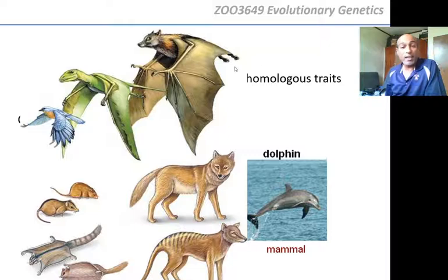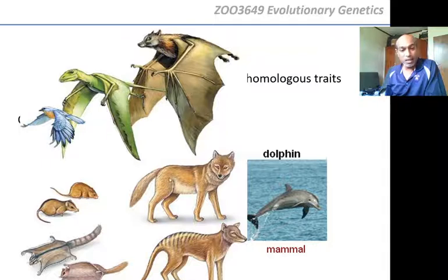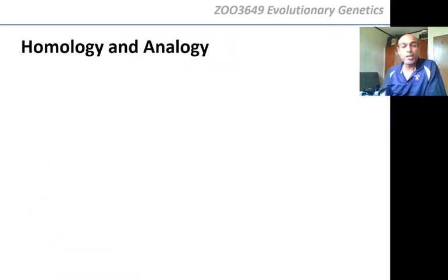Flight is another analogous trait: birds fly, pterosaurs — flying dinosaurs — also flew, and bats fly, but they evolved flight independently. It's an analogous trait. Here is the wolf and the Tasmanian wolf — one is a marsupial, one is a modern mammal. They look the same but are absolutely not the same.